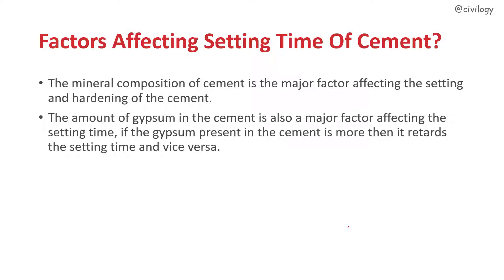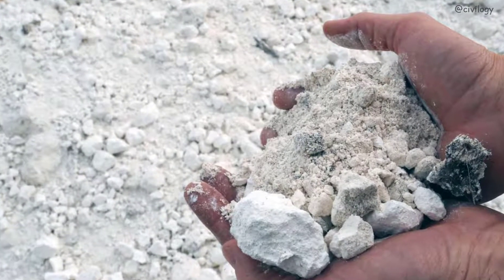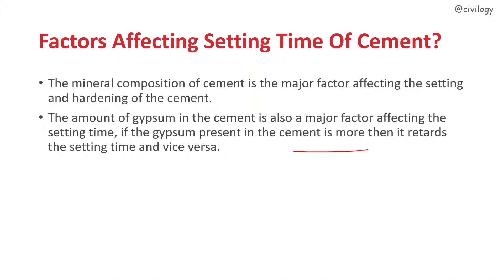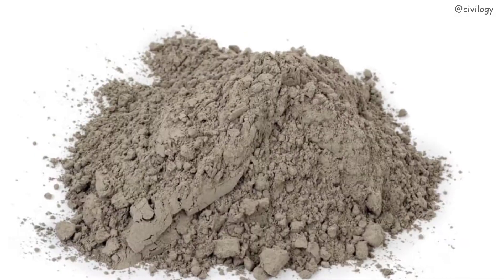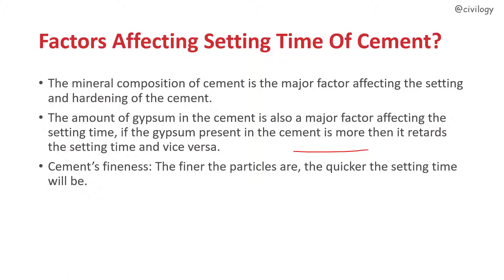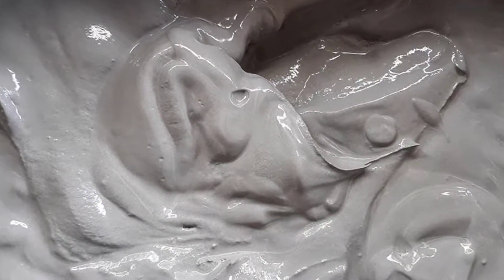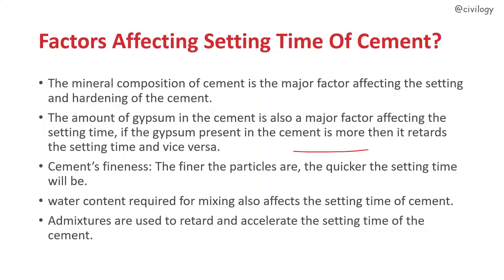The amount of gypsum in the cement is also a major factor affecting the setting time. If the gypsum present in the cement is more, then it retards the setting time, and vice versa. The finer the cement particles are, the quicker the setting time will be. Water content required for mixing also affects the setting time. Admixtures are used to retard and accelerate the setting time — mostly in ready-mix concrete plants, admixtures are used to retard transport time to the required destination.